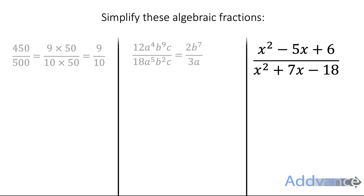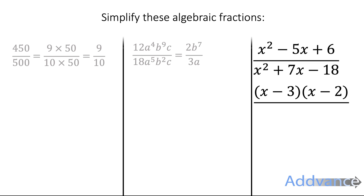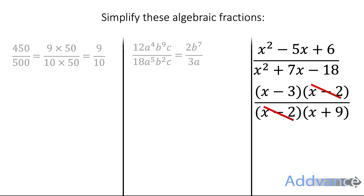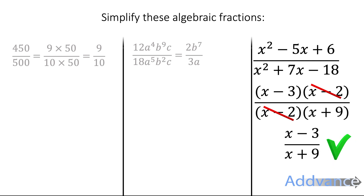This is a quadratic algebraic fraction, and here it's always a good idea to factorise the top and the bottom. We factorise to get x minus 3 times x minus 2 on top, and x minus 2 times x plus 9 on the bottom. If you don't remember how to factorise quadratics, go back to my videos on factorising quadratics — the link will be in the description. We have x minus 2 on both top and bottom, so we cancel those out, leaving x minus 3 over x plus 9 as the final answer.